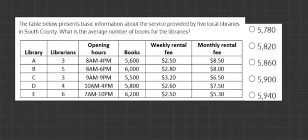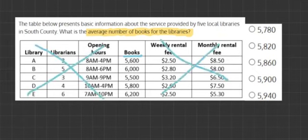Let's highlight the important part — the average number of books for the library. When we look at our chart, it has a lot of information, but only one section is telling us about the books: the middle one. So we can actually eliminate all the other information as it's irrelevant to us.